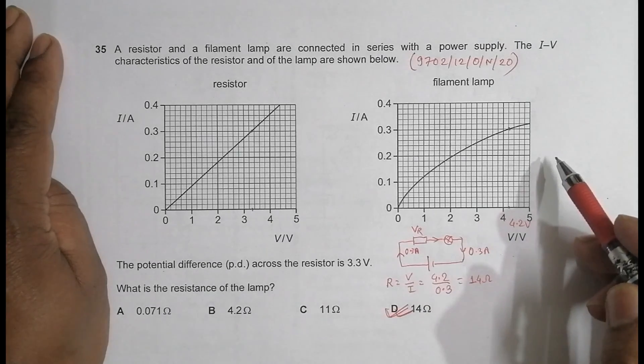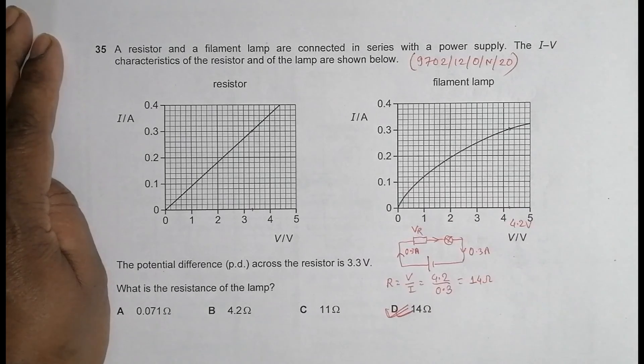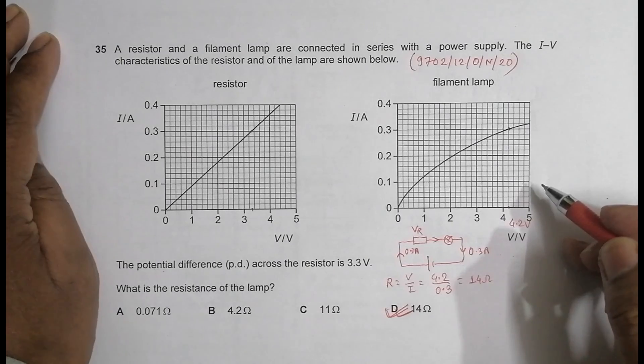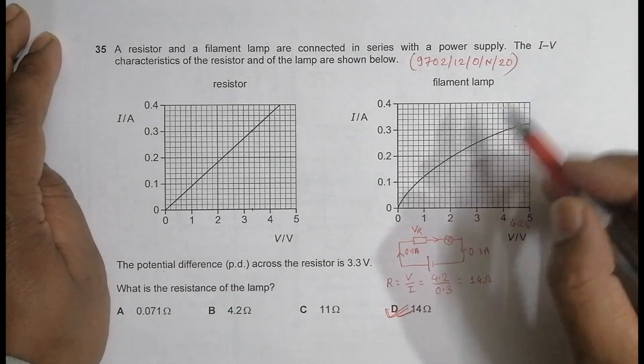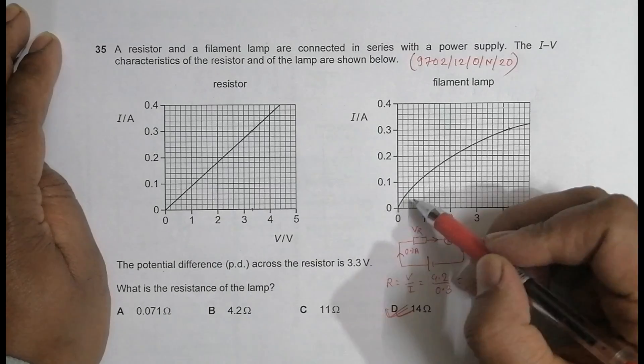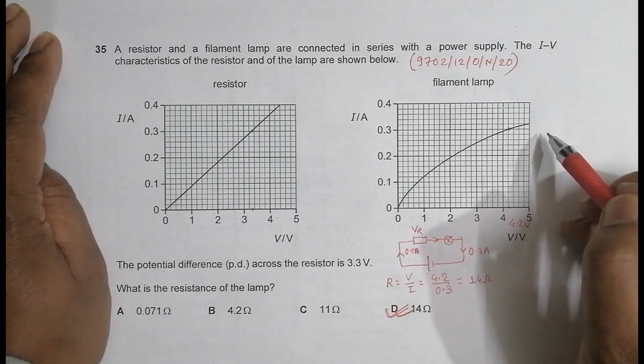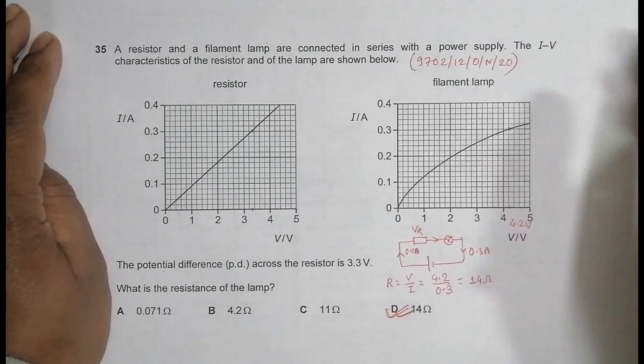So this answer is okay. It was not so difficult, but this question shows you the difference in the graph for I-V in case of resistor and filament. For resistor it is straight and through the origin, but in filament it starts from origin but curves towards the voltage, which shows that as PD increases the resistance goes on increasing.